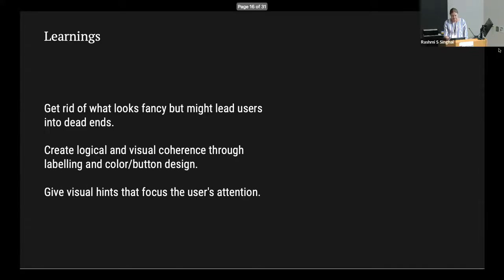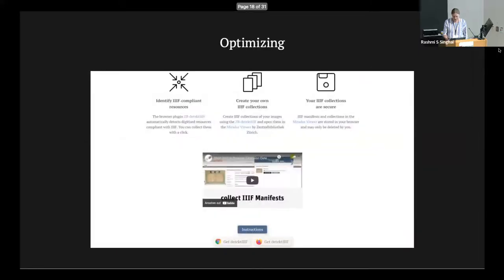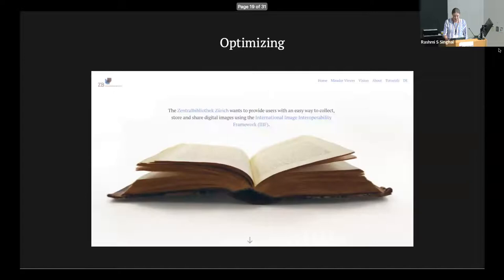So what were the results? As said, we don't have a UX designer on our team, so we had to do the learning ourselves. We learned that we have to get rid of what looks fancy but leads users into dead ends. We need to create logical visual coherence through labeling, color, and button design, and give visual hints that focus the user's attention. For example, on the landing page we had a Mirador viewer button — people would click it and go directly to the viewer without even seeing the detective. So they wouldn't scroll down, which we wanted them to do. We got rid of the button.